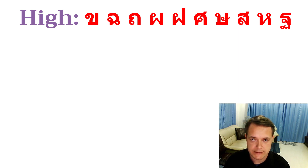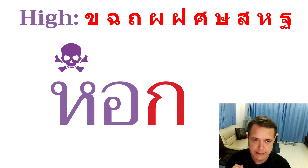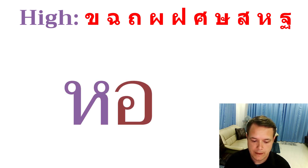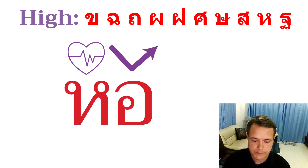If there is no tone mark on a high class consonant, we have to determine whether the syllable is dead or live. If it ends in a hard consonant, that makes it dead — and a dead syllable in the high class consonants means it's a low tone. If it ends in a long vowel, that makes it live — and a live syllable in the high consonant class gives a rising tone. That covers the high class consonants.